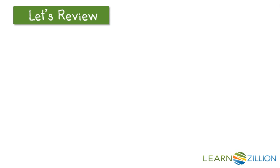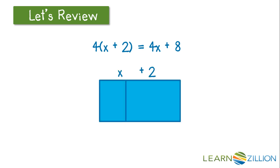Let's review distribution. We know 4 times the quantity x plus 2 is equal to 4x plus 8. This is because we are multiplying x plus 2 times 4, and 4 times x gives us 4x, and 4 times 2 gives us 8.